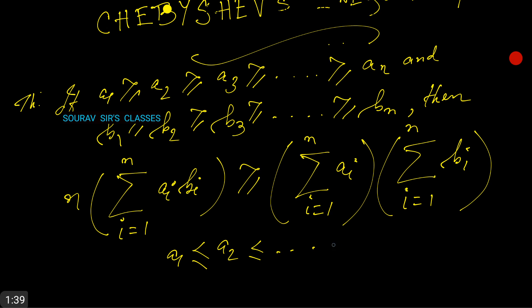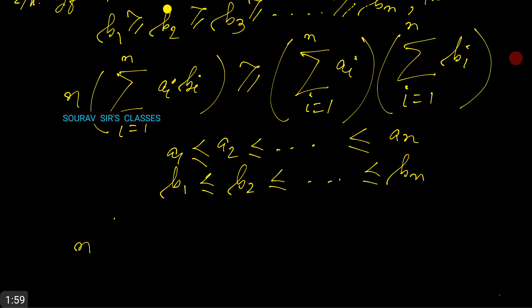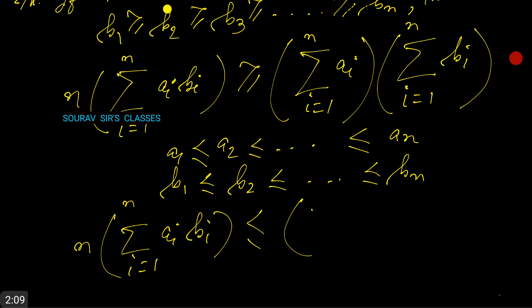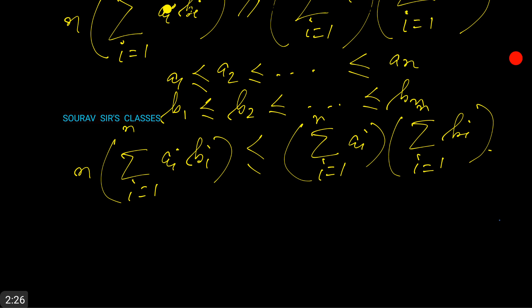On the other hand, if a₁ ≤ a₂ ≤ ... ≤ aₙ and b₁ ≤ b₂ ≤ ... ≤ bₙ, we will have the same inequality but with the inequality sign reversed, so n · Σaᵢbᵢ ≤ (Σaᵢ)(Σbᵢ).